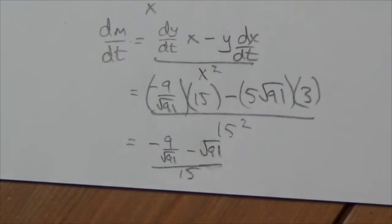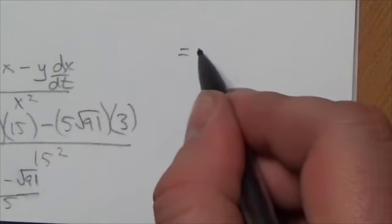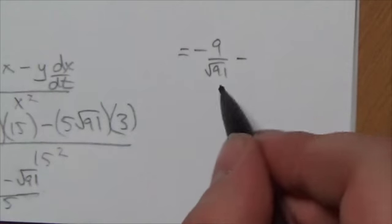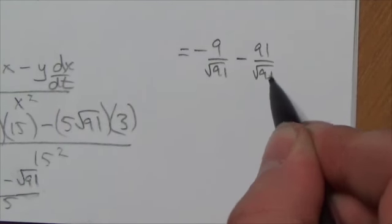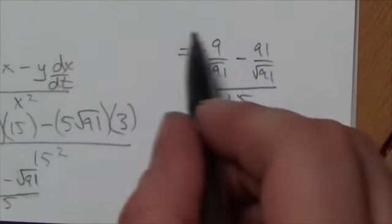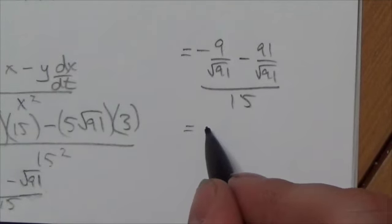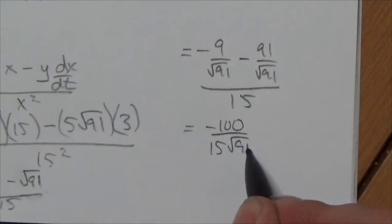I mean, who am I kidding? I'm just going to put this together. So in the numerator here, let's take a look over here. Bring this over. This is going to become negative 9 over root 91. The common denominator here is going to be root 91. So this will become 91 over root 91 all over 15. And so this is going to become... It actually works out relatively nicely. Negative 100 over 15 root 91.